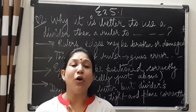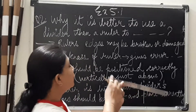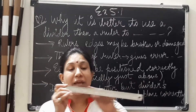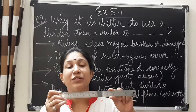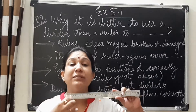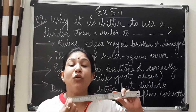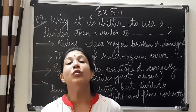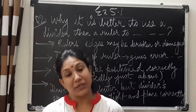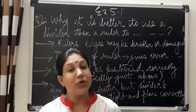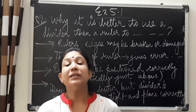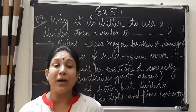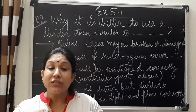We make it a habit of always placing the ruler from the tip of the scale and then we measure. We sometimes forget that the zero mark on the scale is missing, so it will give you wrong measurements. This is one type of error.